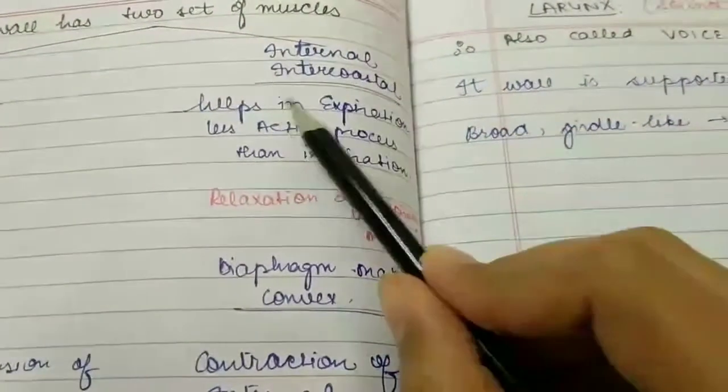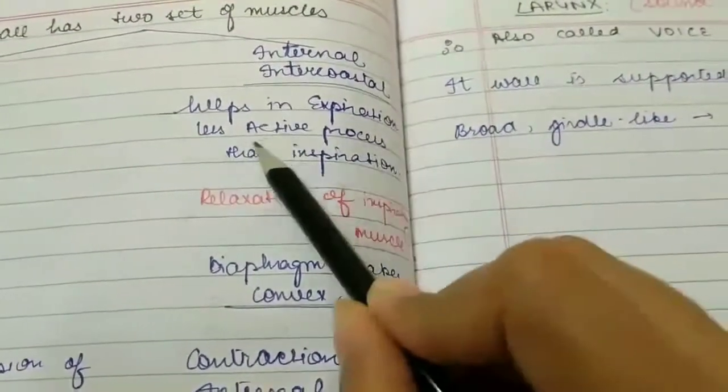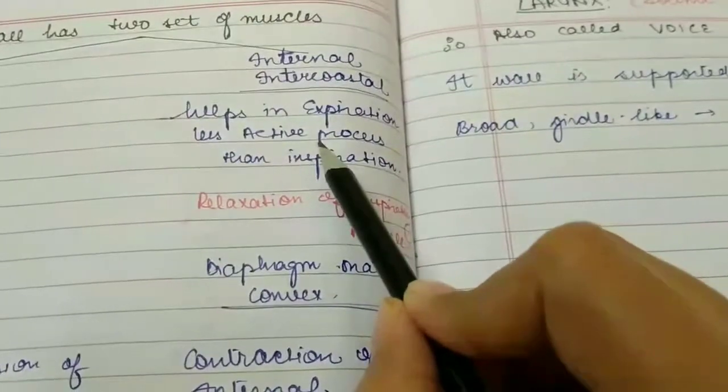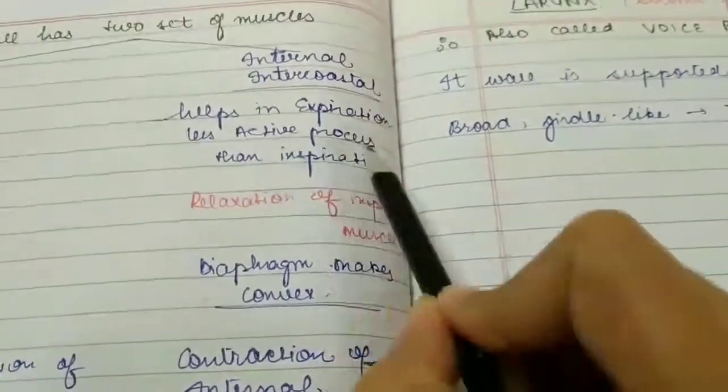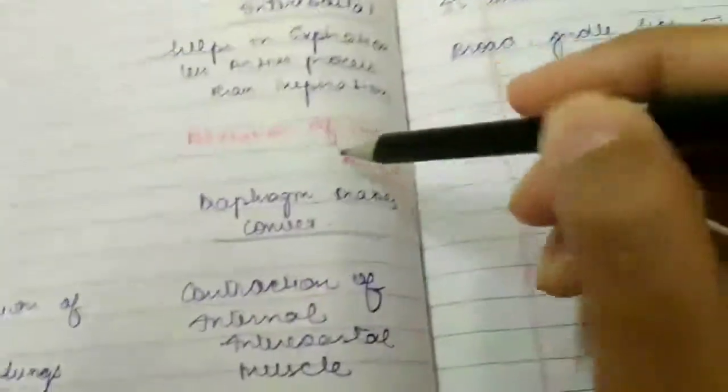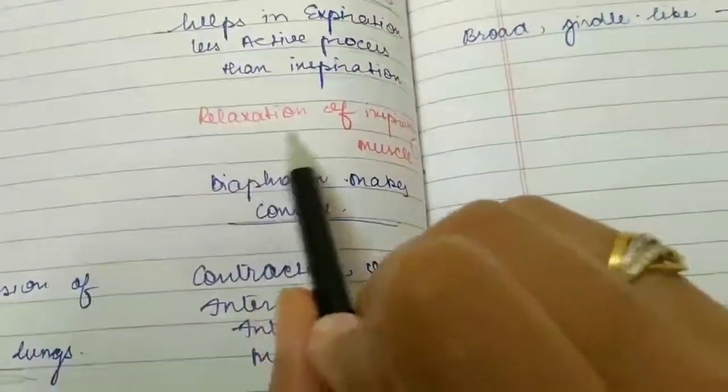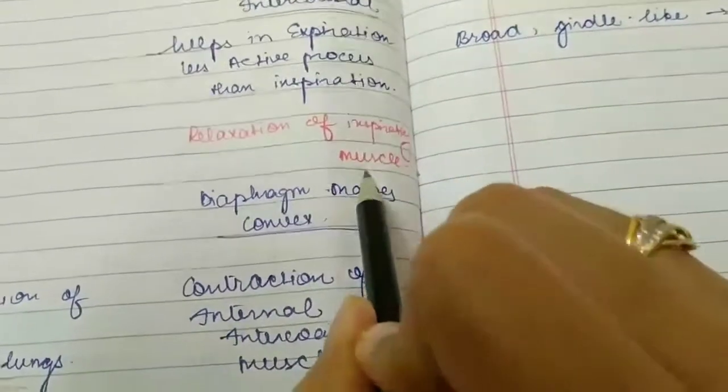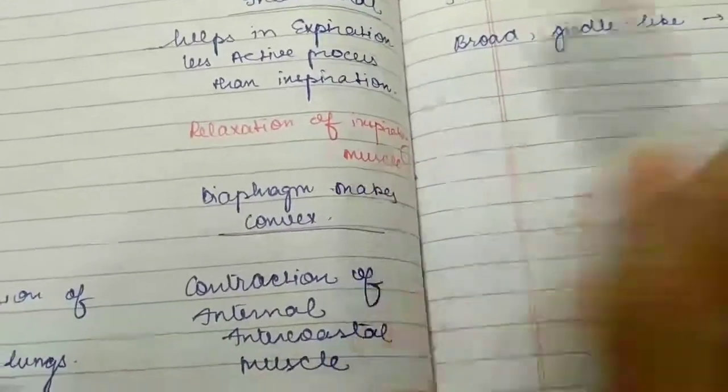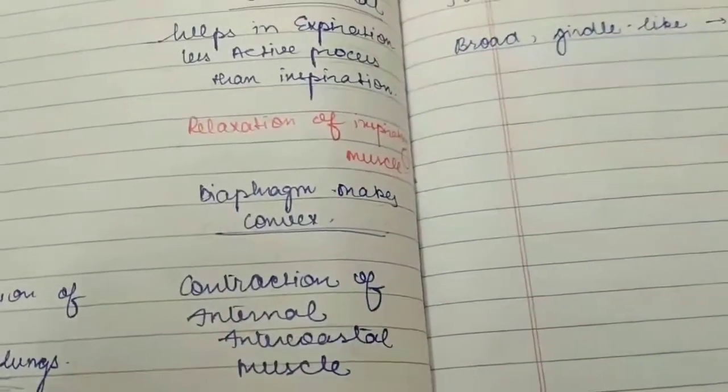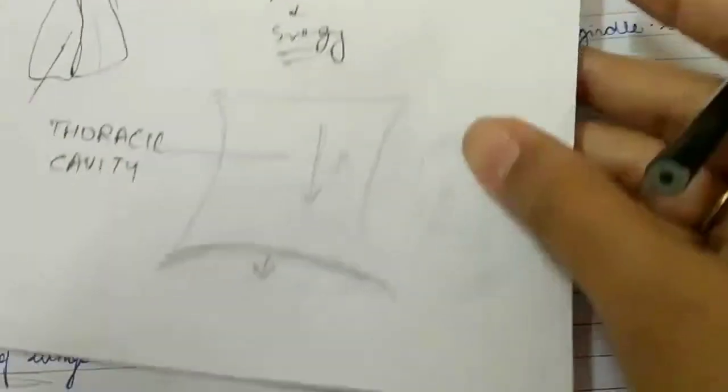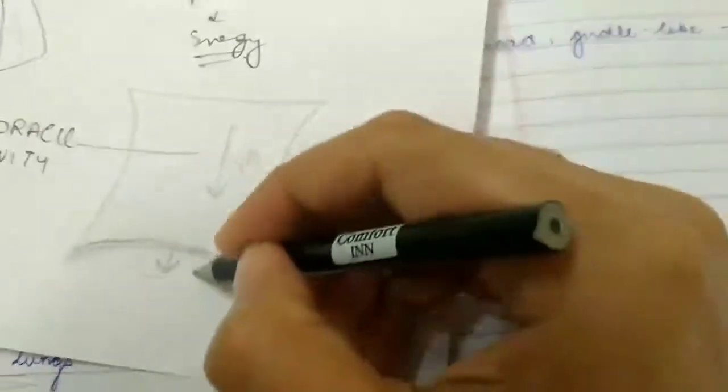Internal intercostal muscles help in expiration, and expiration is a less active process. It involves relaxation of inspiratory muscles. The diaphragm becomes convex again - it goes from flat to convex during expiration.